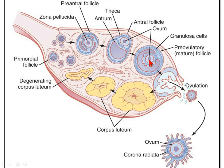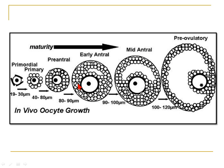As the antral cavity enlarges, the oocyte is pushed further towards the periphery and is now ready for ovulation. For ovulation to occur, it requires the action of another hormone — the luteinizing hormone. During these changes, the oocyte increases in size due to proliferation of follicular cells, reaching 100 to 120 micrometers at the time of ovulation, compared to the primordial follicle size of about 30 to 90 micrometers.